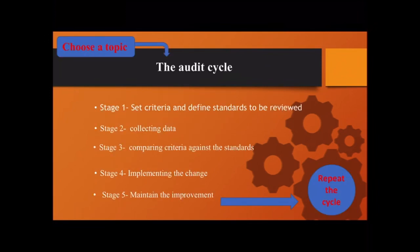So how to make an audit? First, we have to choose a topic, then we follow the audit cycle, and then we repeat the cycle. The audit cycle is composed of five stages: stage one — set criteria and define standards; stage two — collect data; stage three — compare criteria against standards; stage four — implement the change; stage five — maintain the improvement; then repeat the cycle.